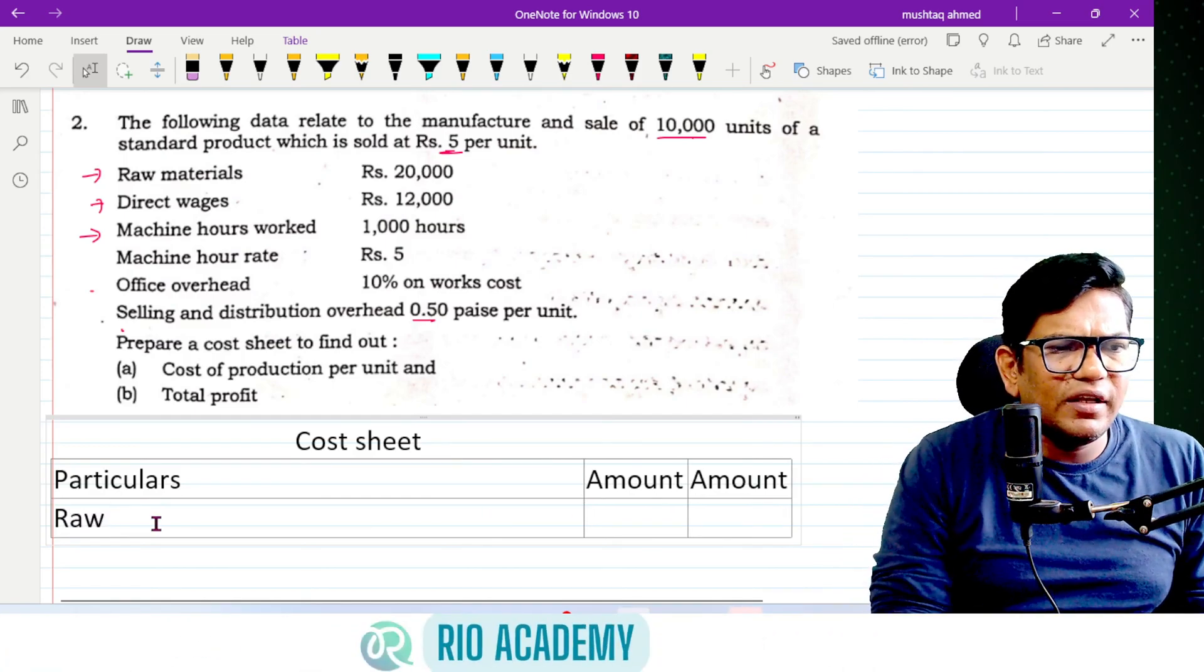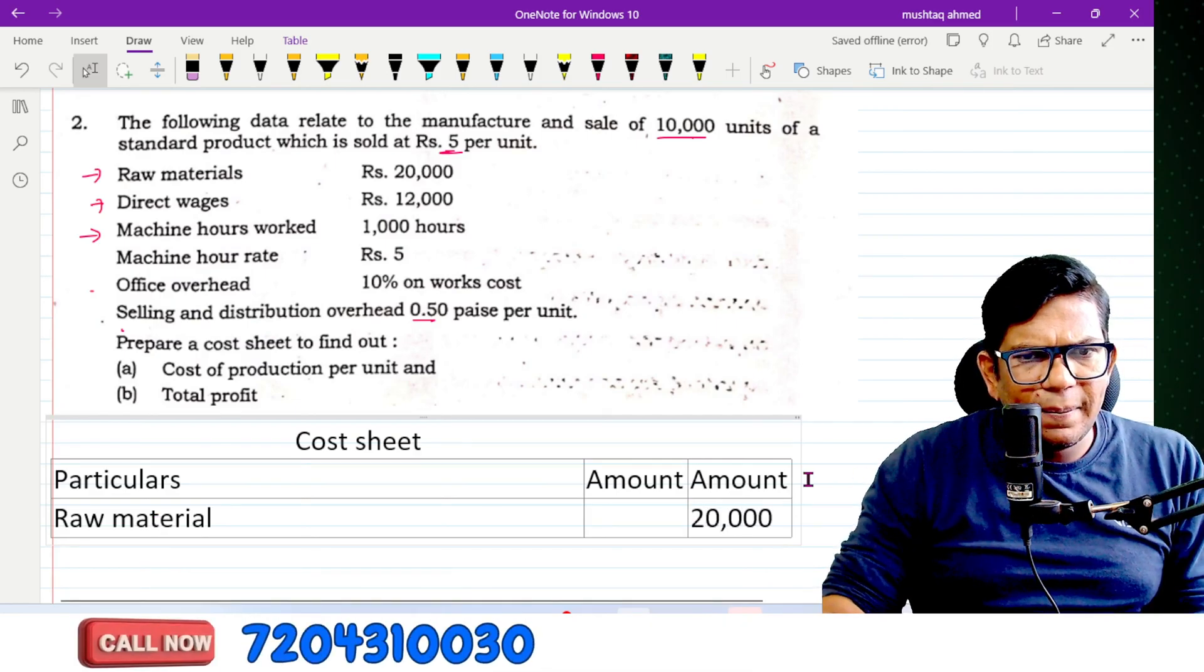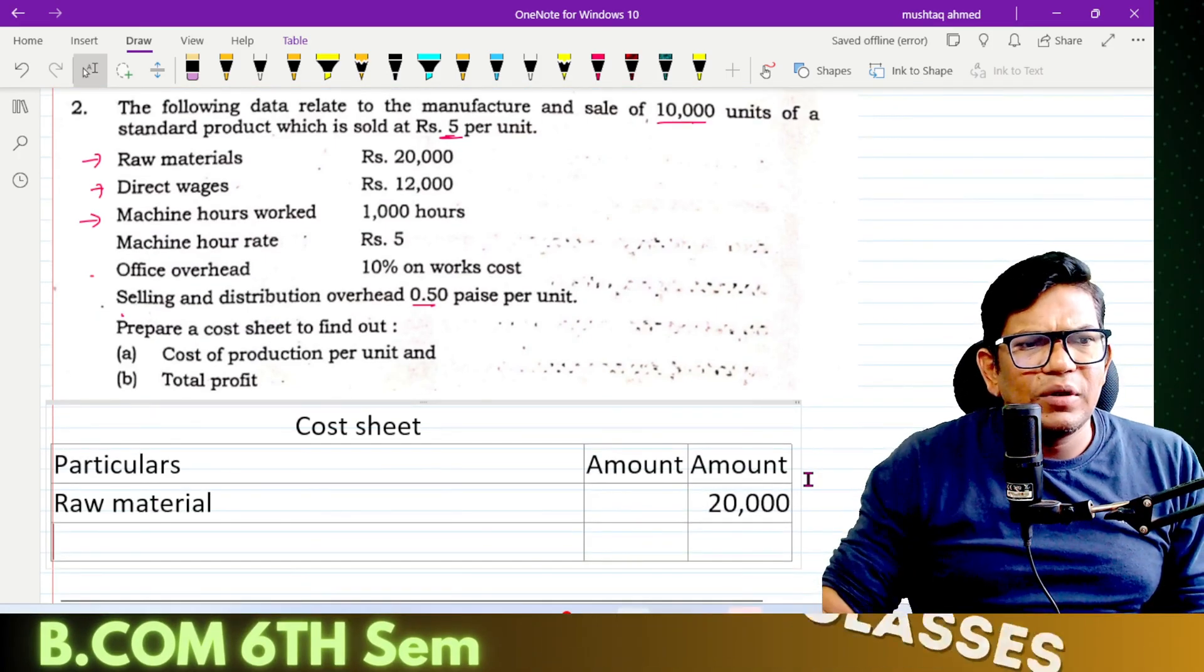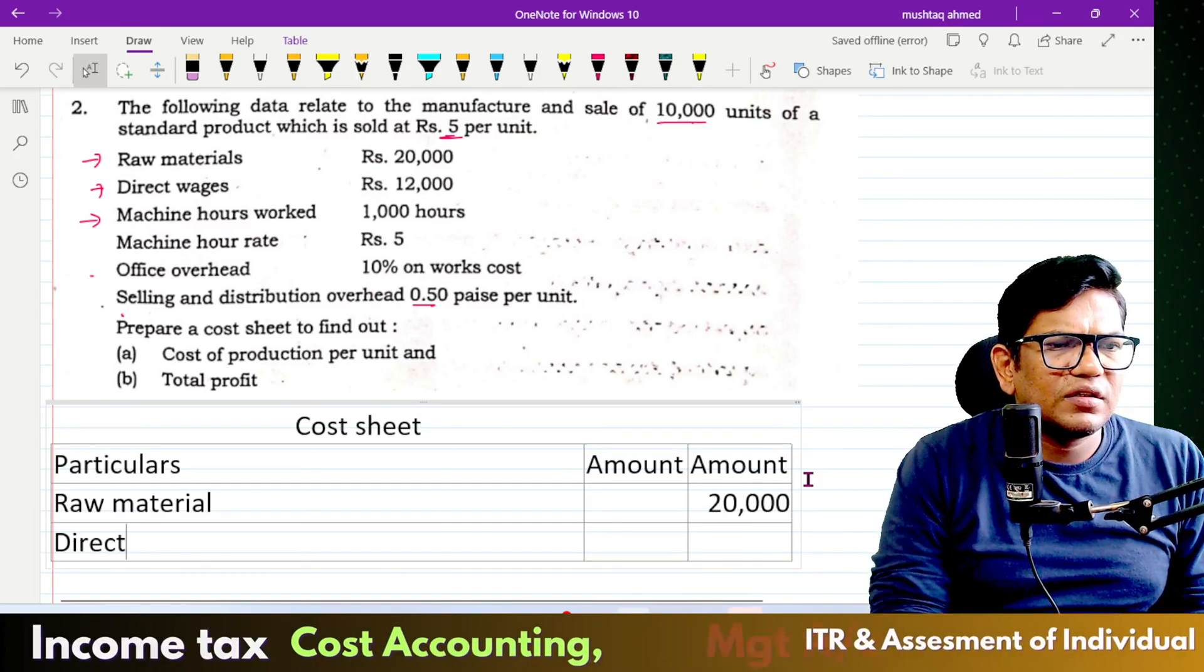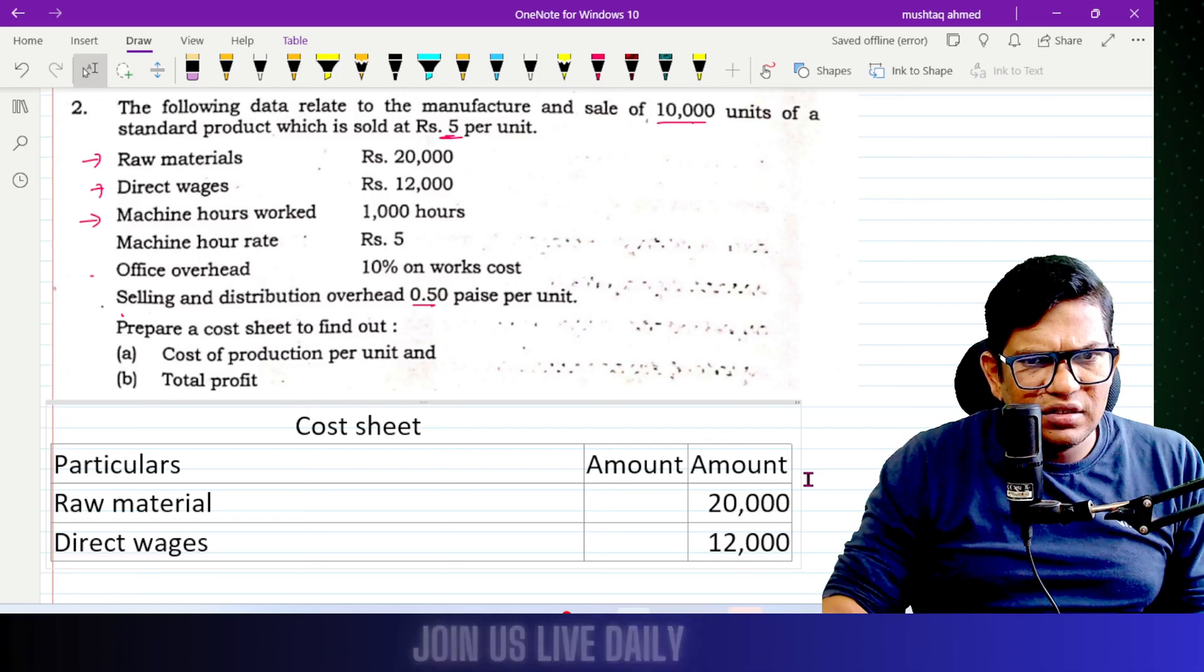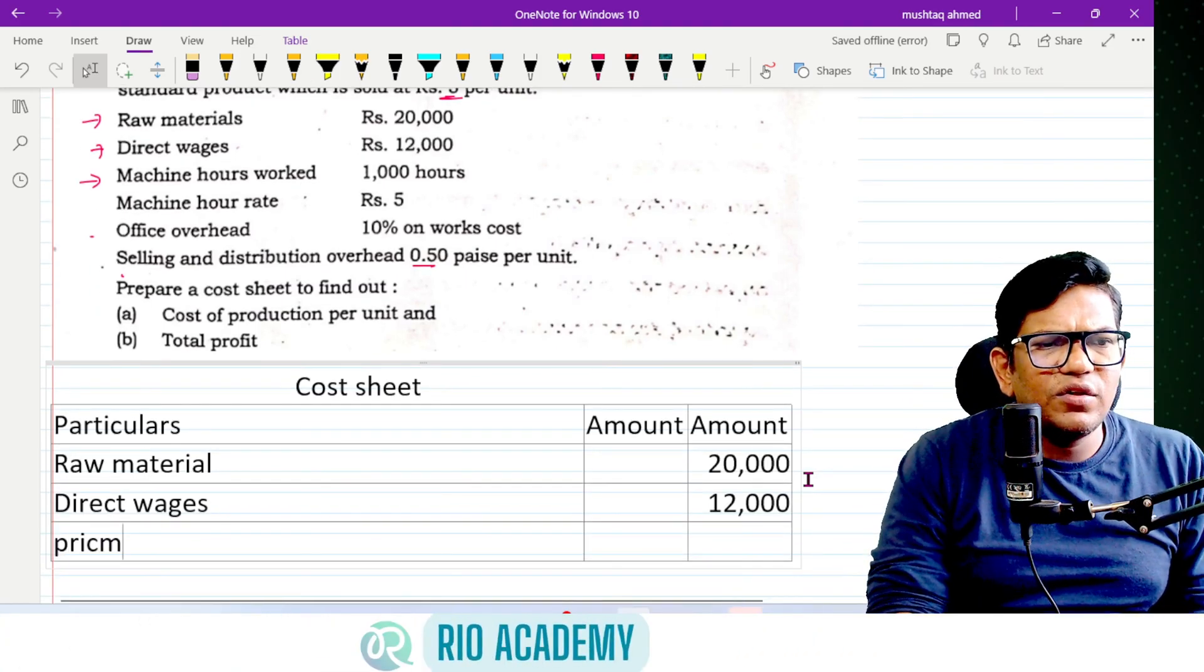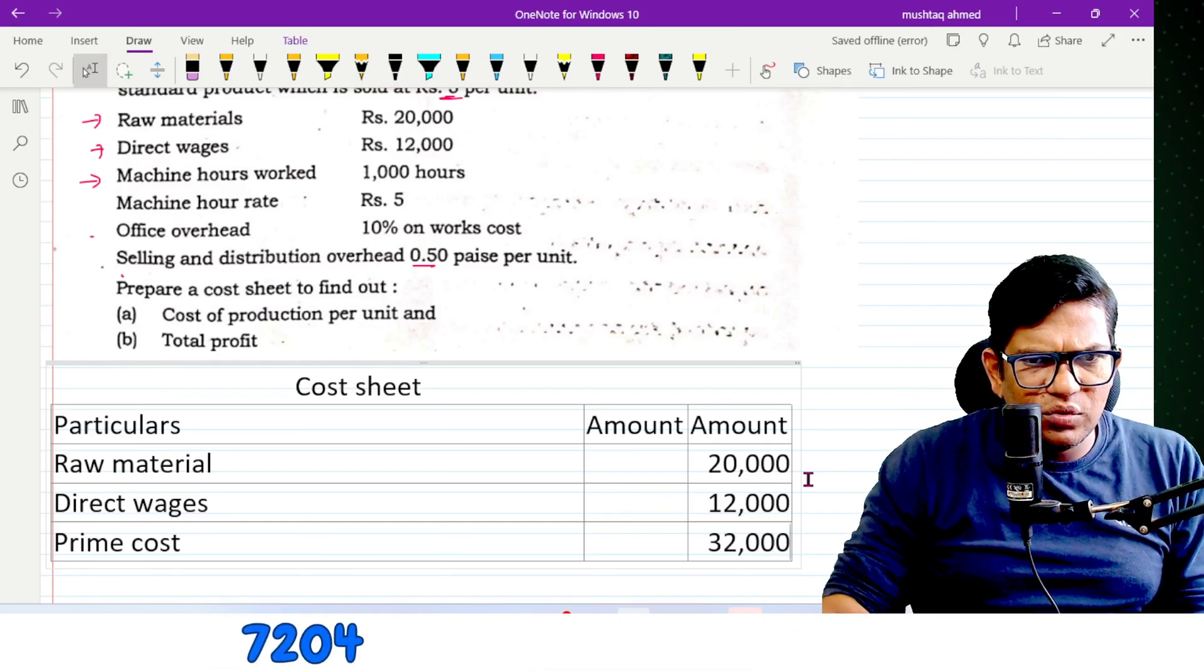Starting with raw material: 20,000. Direct wages: 12,000. Prime cost is 32,000.